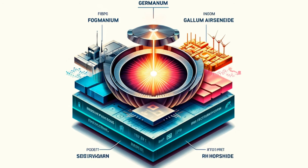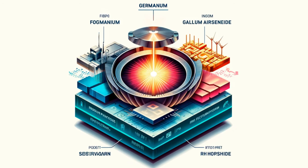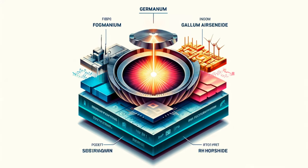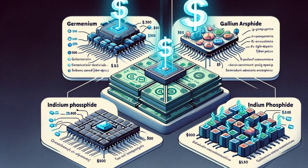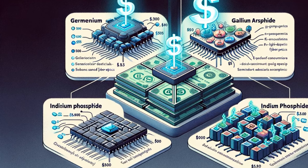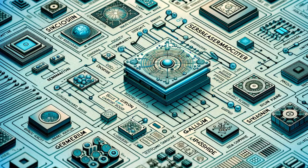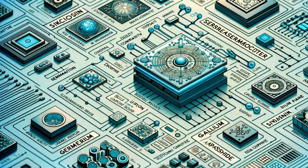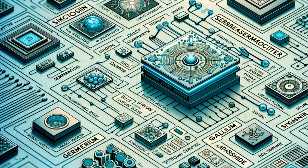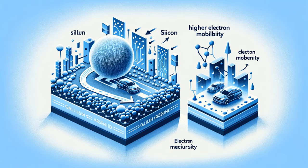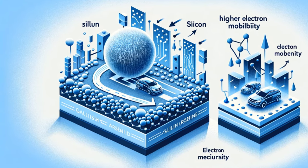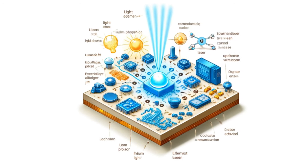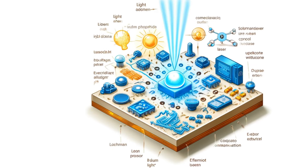Silicon is the most widely used semiconductor material due to its abundance, low cost and favourable electrical properties. However, other materials such as germanium, gallium arsenide and indium phosphide are also used in specific applications. Each semiconductor material has its own unique set of properties such as band gap energy, electron mobility and thermal conductivity. These properties determine the material's suitability for particular applications. For example, gallium arsenide has a higher electron mobility than silicon, making it suitable for high-speed electronics. Indium phosphide is used in optoelectronic devices due to its efficient light emission properties.